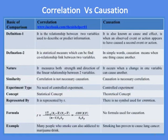Definition 1: Correlation is the relationship between two variables used to describe or predict information, while causation, also known as cause and effect, is when an observed event or action appears to have caused a second event or action.